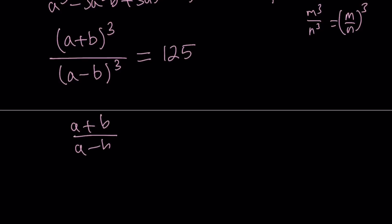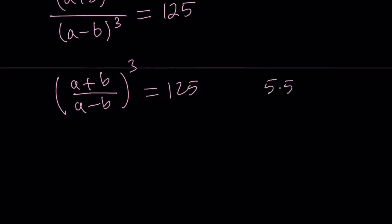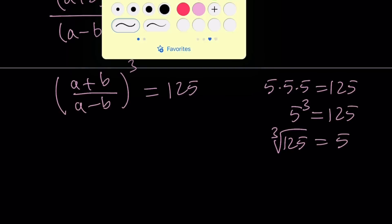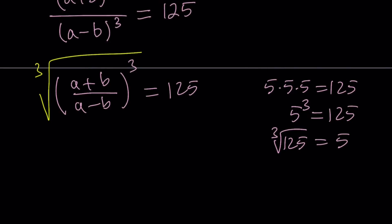a plus b divided by a minus b to the third power equals 125. So you're now thinking, what number to the third power equals 125? And that is answered by the cube root of 125, which happens to be 5. Because 5 times 5 times 5 is equal to 125. In other words, 5 to the third power is equal to 125. Therefore, the cube root of 125 is equal to 5. So if you go ahead and cube root both sides here, then we're going to get a plus b divided by a minus b equals 5.